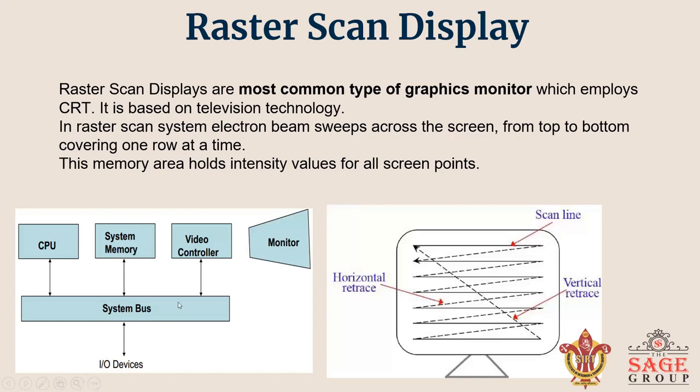Here you can see the diagram — this is the architecture of a raster scan display. In this, each screen point is refreshed with the pixel, also called a picture element. At the end of each line, the electron beam returns to the left side of the screen to begin displaying the next line.